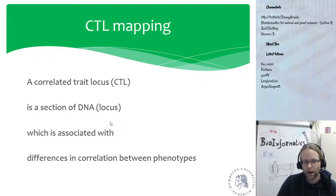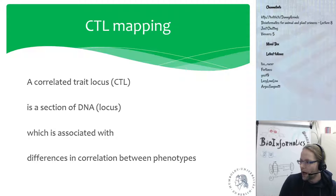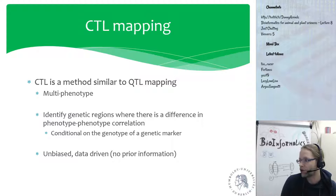The method I developed is called Correlated Trait Locus mapping, or CTL mapping. I define a correlated trait locus as a section of DNA which is associated not with a difference within a single phenotype between means, but which is associated with the difference in correlation between two phenotypes. Normally in QTL we split individuals at a marker into two groups and compare means, but CTL mapping is multi-phenotype — we use a pair of phenotypes. We identify genetic regions where there is a difference in the phenotype-phenotype correlation structure, conditional on the genotype of the marker.